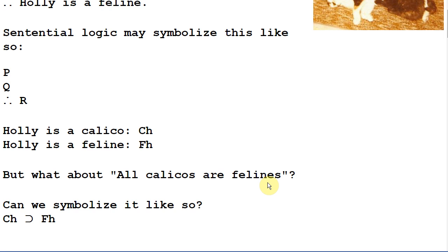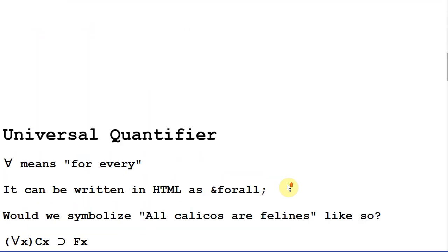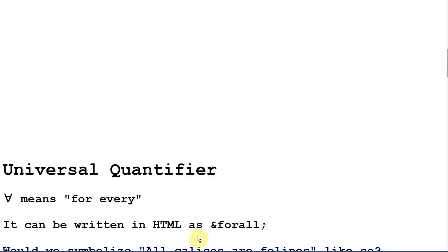So we want a new symbol that lets us represent a statement about all of something. And that new symbol is the universal quantifier. And it can be written in HTML as ampersand for all semicolon. So the universal quantifier here it looks like an upside down A. There are other ways to symbolize this but this is the symbol I'm using here. And it means for every.